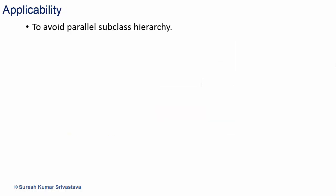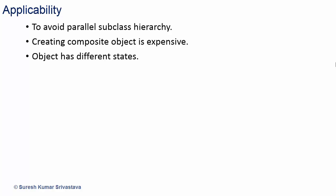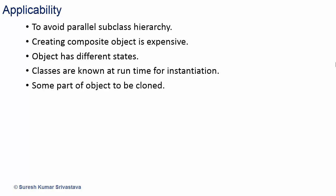So where is it applicable? Obviously in scenarios where we want to avoid parallel subclass hierarchies. In situations where it is better to have a prototype and clone it instead of creating a new object every time — like a composite object that requires a lot of processing and is expensive to recreate repeatedly. When there are different states of an object and we want to avoid multiple classes or passing different constructor parameters. When classes are known only at runtime, for example by dynamic loading. Also when some part of an object needs to be cloned because it must be created repeatedly and may be expensive or have different states.